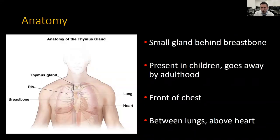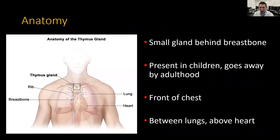The thymus is a small gland situated behind the breastbone. It is normally present in children and slowly goes away during puberty and young adulthood in most people. It is in the front of the chest in what we call the pre-vascular or anterior mediastinum, situated between the lungs and above the heart. Because of this somewhat hidden location, imaging is important in the evaluation of the thymus, and regular chest X-rays are generally not helpful in evaluating and following thymic tumors. So we will start with CT scans.